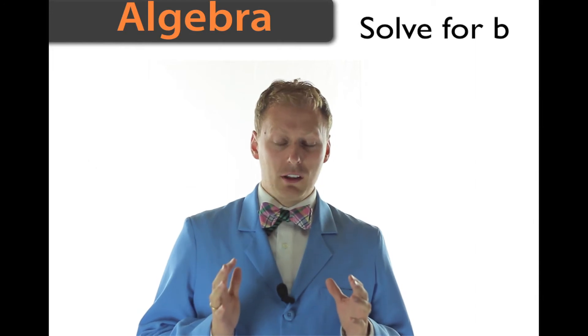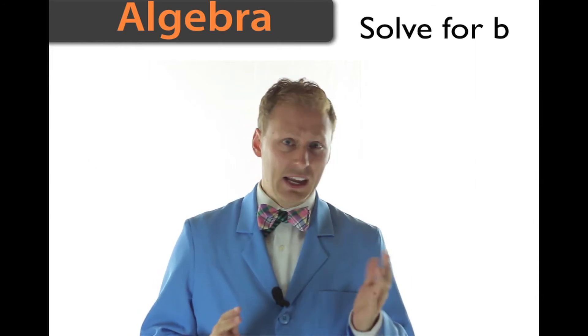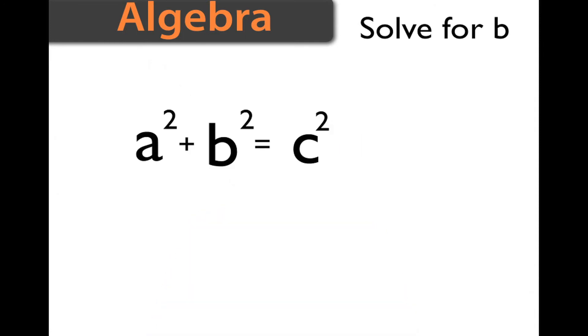Hello again. Now we are going to look at how to algebraically manipulate the formula in trigonometry: a² + b² = c². This is often how you find one of the sides of a triangle.